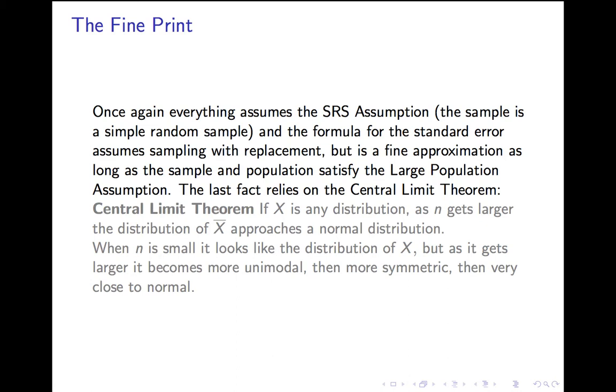The third assumption is wrapped up with a deep fact called the central limit theorem. The central limit theorem says if X is any distribution, as n gets larger, the sampling distribution of x-bar for samples of size n approaches the normal distribution. Looks more and more like a normal distribution. In general, when n is small, the distribution of x-bar looks like the distribution of X. As it gets larger, it becomes more and more unimodal, and then it becomes more and more symmetric until it starts looking exactly like the normal distribution.